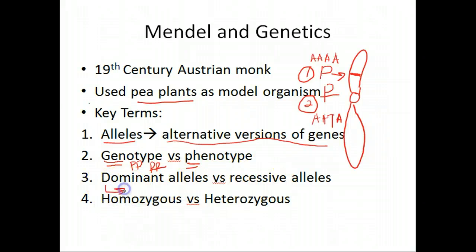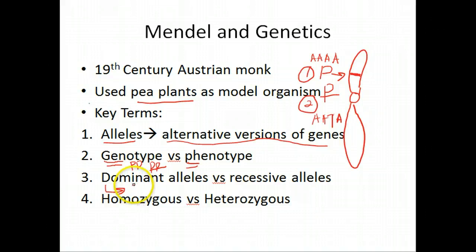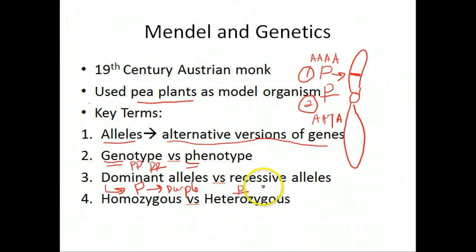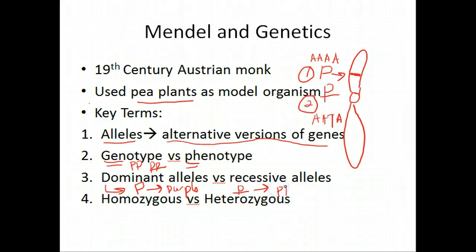Dominant alleles versus recessive alleles: if you're dominant, you kind of take over. Dominant alleles — whatever phenotype they bring on — is what you see. We denote this by an uppercase letter, so big P stands for purple as a phenotype. Whenever you see a big P in an organism's genotype, you know that's purple. Lowercase p is the recessive allele for flower petal color. The only time you see a recessive phenotype is when both alleles are recessive — in this case, white petals.